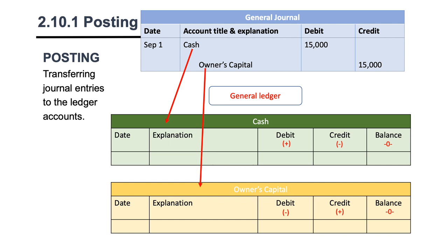Now I can start posting. I have debit cash for $15,000, so first I put the date and then I add $15,000 under debit. Then I add $15,000 to the opening balance of zero and get a new balance of $15,000. For owner's capital, I start with the date, add $15,000 to the credit side, do $15,000 plus zero, and get $15,000.